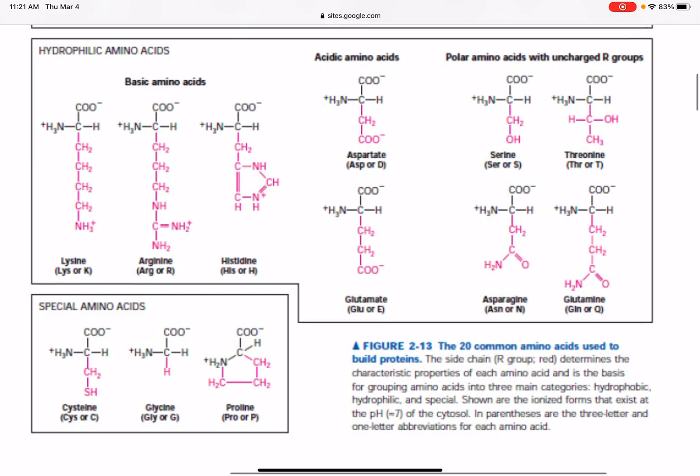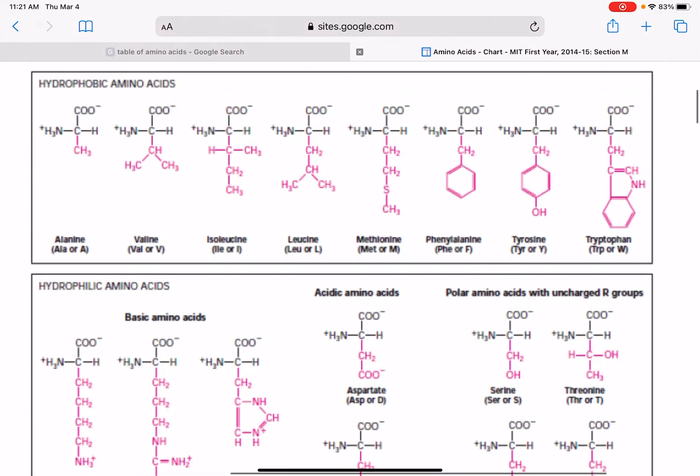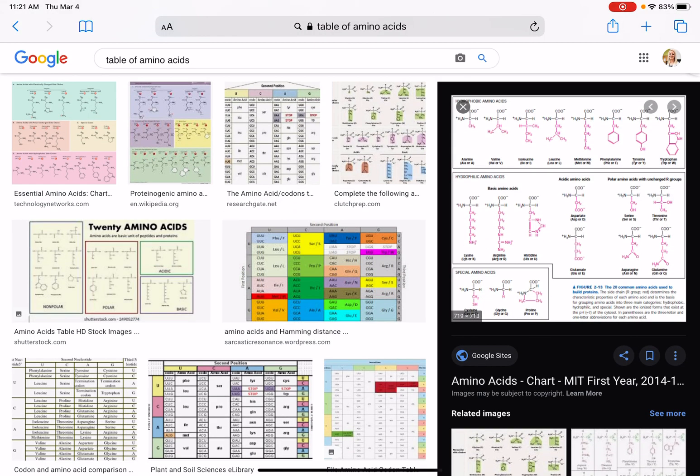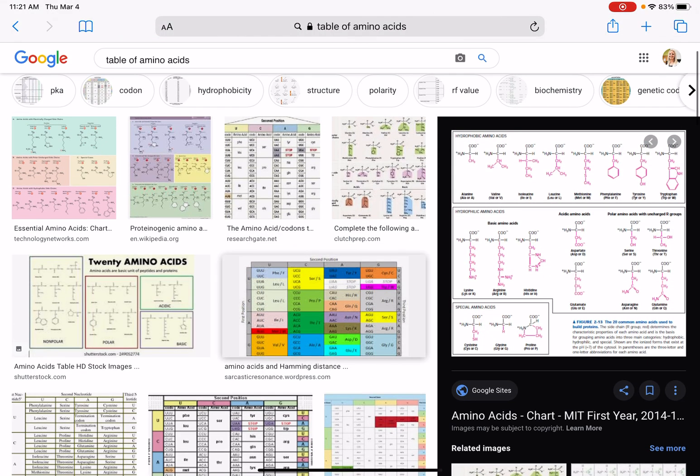Just kind of depending on the purpose, sometimes it's useful to do a three-letter abbreviation. Sometimes it's useful to do a single-letter abbreviation. So find a table that is like this. This is a good thing to have handy when you're working on problems in this particular chapter.